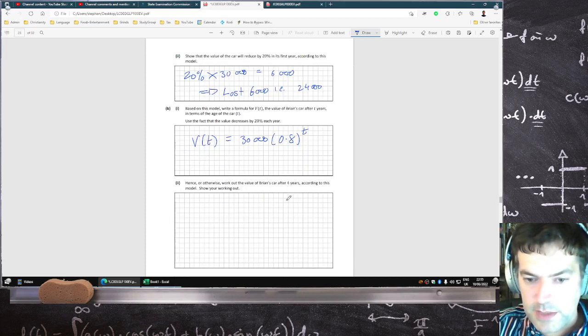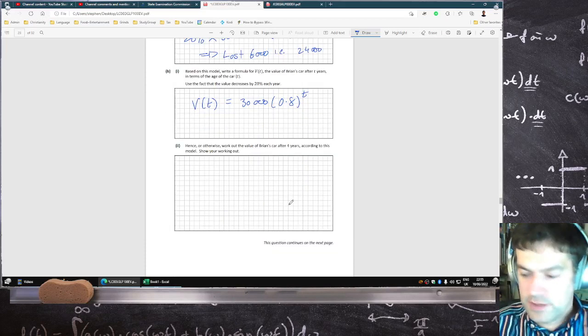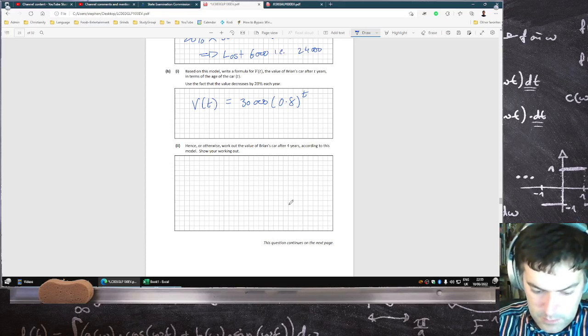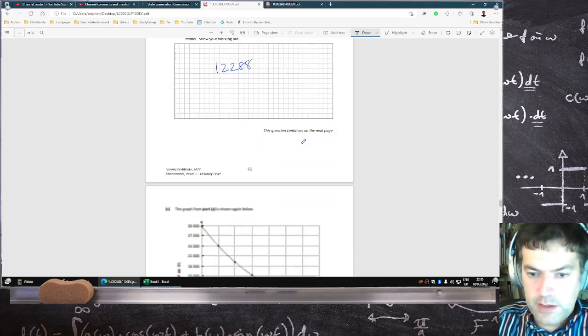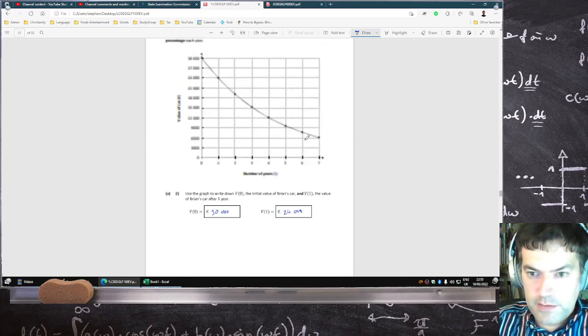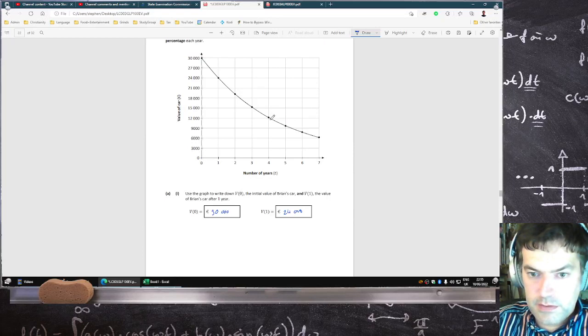Hence or otherwise work out the value of Brian's car after four years. 12,288, just sub in four. And does that look right on the graph? Yep, it does.